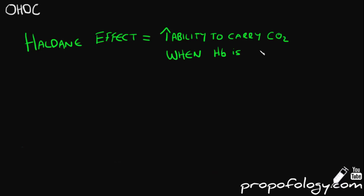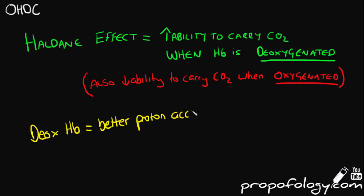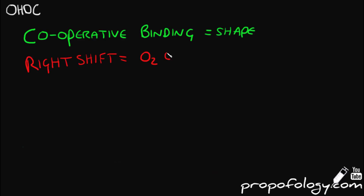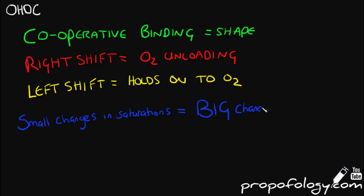The Haldane effect describes the increased ability of deoxygenated haemoglobin to carry carbon dioxide. The converse is true, as oxygenated blood has a reduced capacity to carry carbon dioxide. The Haldane effect occurs because deoxygenated haemoglobin is a better proton acceptor than oxyhaemoglobin. To summarize: cooperative binding is what gives the curve its shape; a right shift favours oxygen unloading; a left shift causes haemoglobin to hold on to more oxygen; and small changes in saturations can equal big changes in kPa.